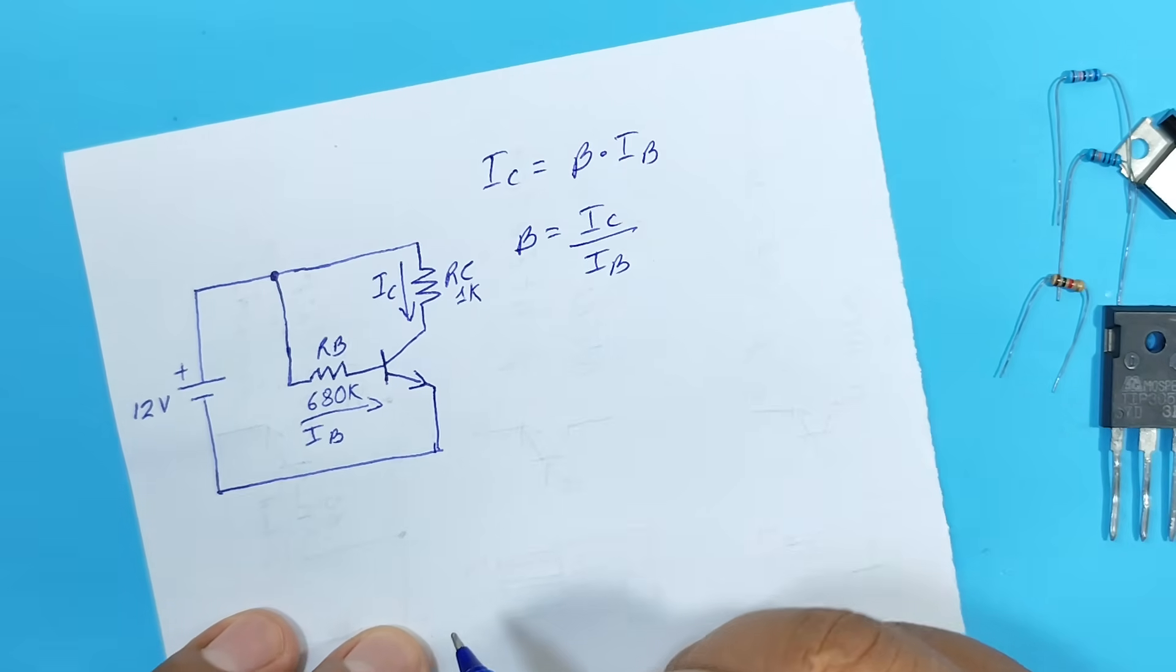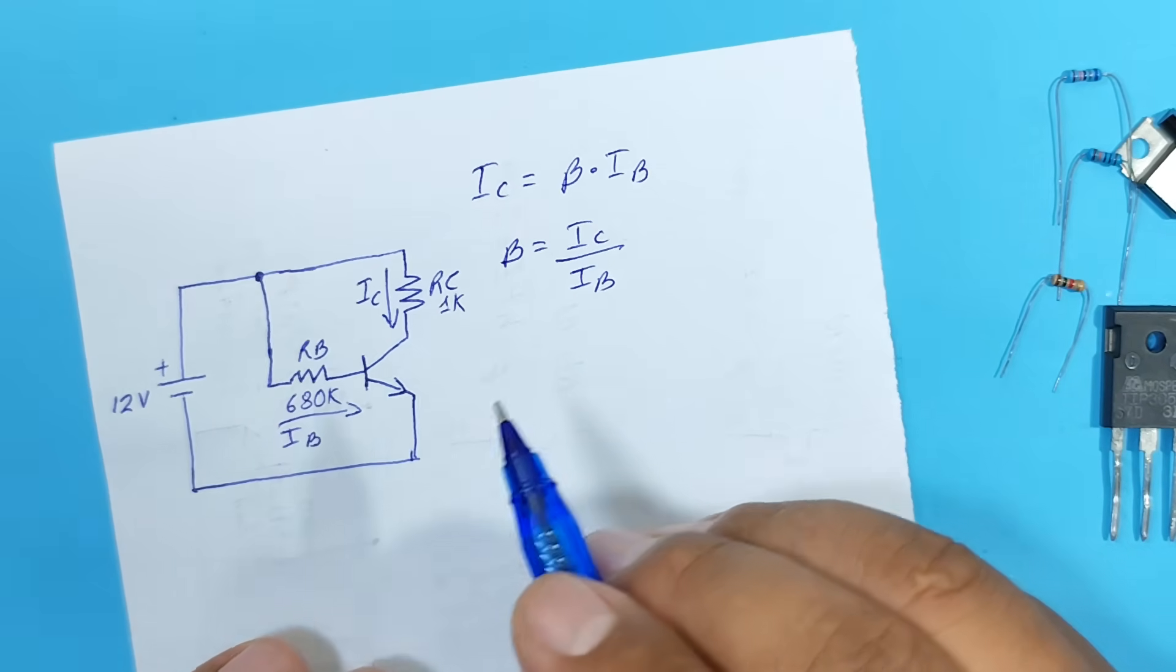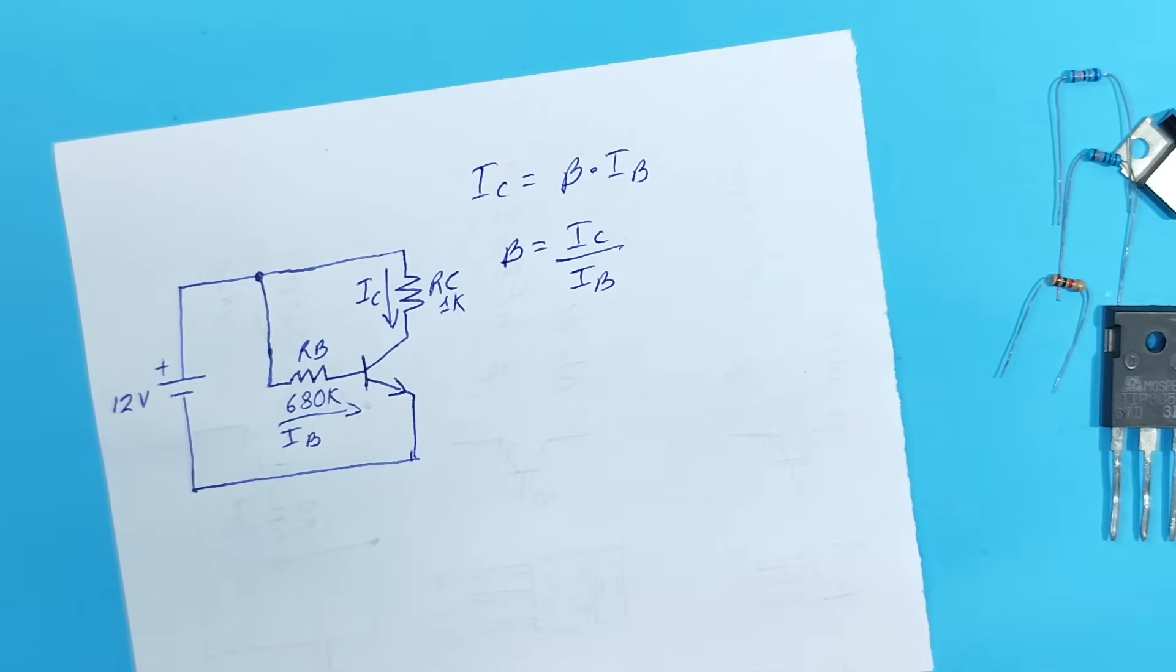Therefore, it's necessary to obtain both currents. So, let's take that measurement with the multimeter.